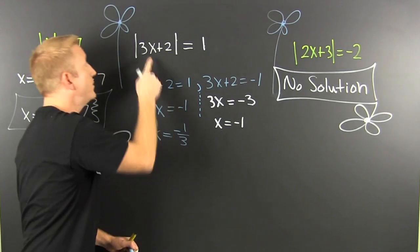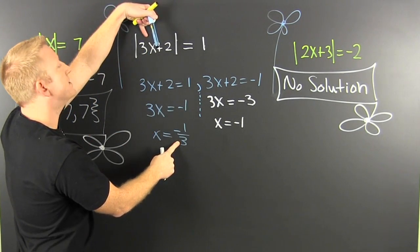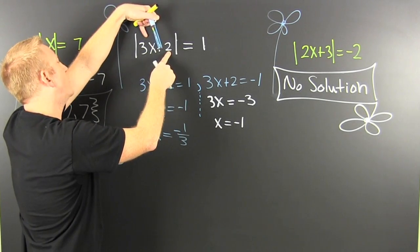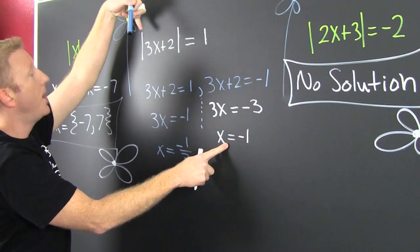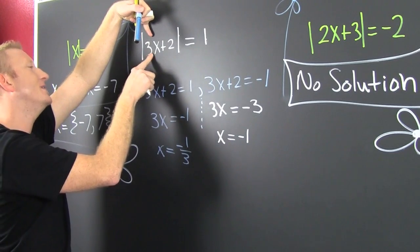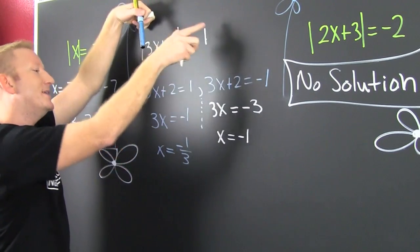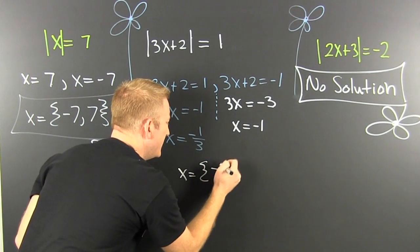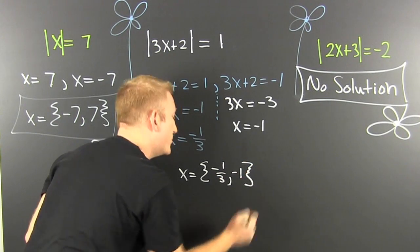Check it! You go when you throw those back up into the original. Well let's see. Minus one third times 3 is minus 1. Minus 1 plus 2 is 1. The absolute value of 1 is 1. Then we go and we check the other one. So then what do we do? We take this minus 1 and we put it up in there. Minus 1 times 3 is minus 3. Minus 3 plus 2 is minus 1. The absolute value of minus 1 is 1. They both work.